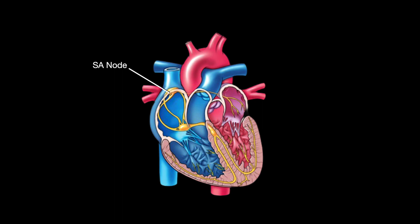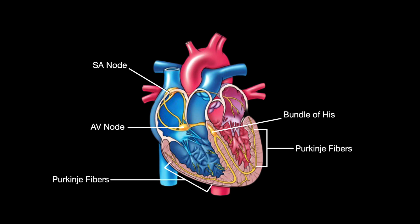Electrical impulses from the SA node spread throughout both atria and stimulate them to contract. The AV node, located on the opposite side of the right atrium near the tricuspid valve, serves as an electrical gateway to the ventricles. It delays the passage of electrical impulses to the ventricles to ensure that the atria have ejected all blood into the ventricles before the ventricles contract. The AV node receives signals from the SA node and passes them on to the bundle of His, which is divided into right and left bundle branches that conduct impulses toward the apex of the heart. The signals are then passed on to Purkinje fibers, which turn upward and spread throughout the ventricular myocardium — the muscle layer.